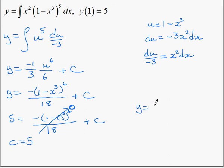The final equation, y as a function of x, gives us -(1 - x³)⁶/18 + 5. Thank you very much.